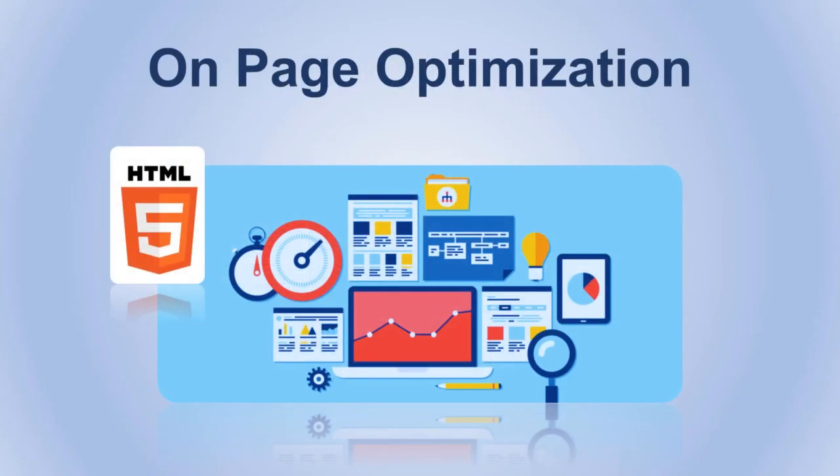The next thing we have is on-page optimization. This means to optimize each page of your website individually in order to rank higher. Basically, you can modify the content and the HTML code of each page.